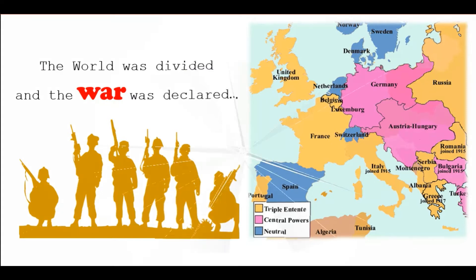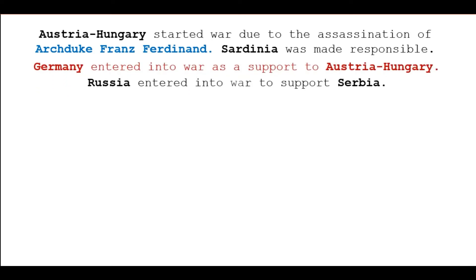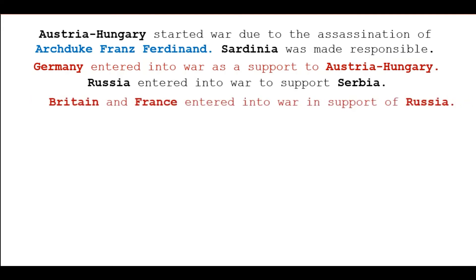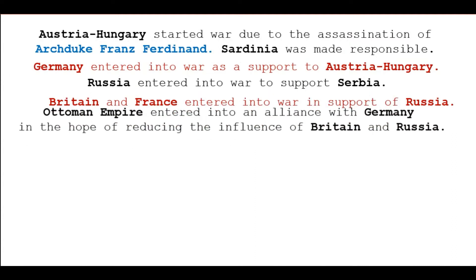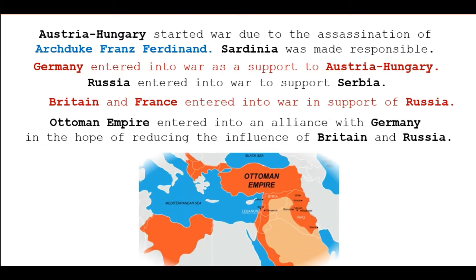Let's see how these countries got involved in the First World War one after another. Austria-Hungary initiated war with Serbia following the assassination of Archduke Franz Ferdinand. Germany entered in support of Austria-Hungary. Russia entered to support Serbia. Then Britain and France entered in support of Russia. The Ottoman Empire entered into an alliance with Germany hoping to reduce the influence of Britain and Russia. The Ottoman Empire was located at a strategic location near the Mediterranean Sea and Black Sea, giving easy access to Europe, Asia, and Africa.